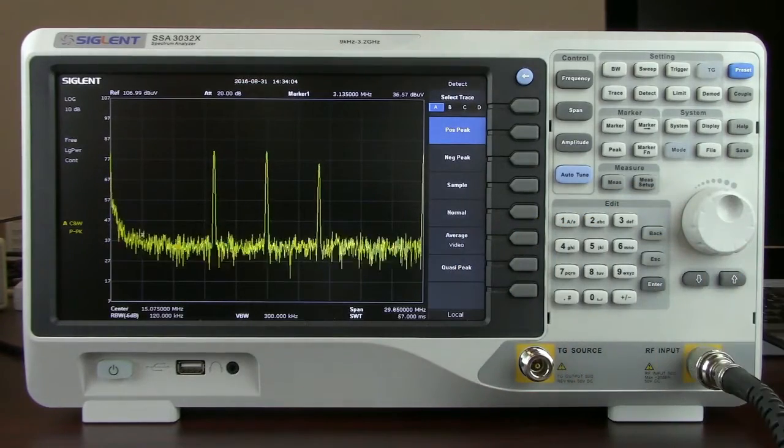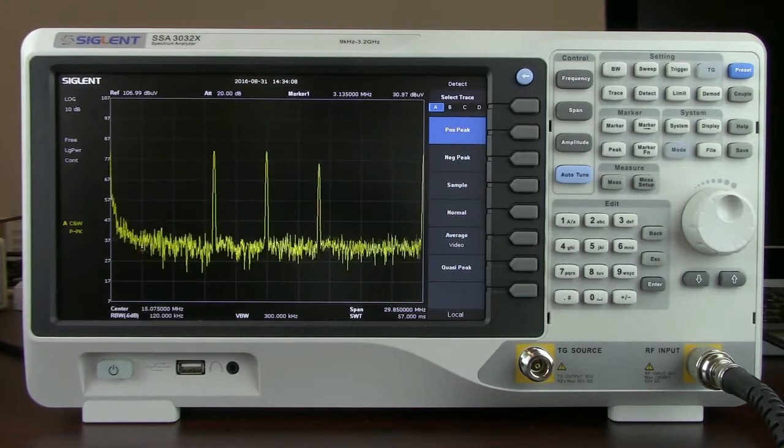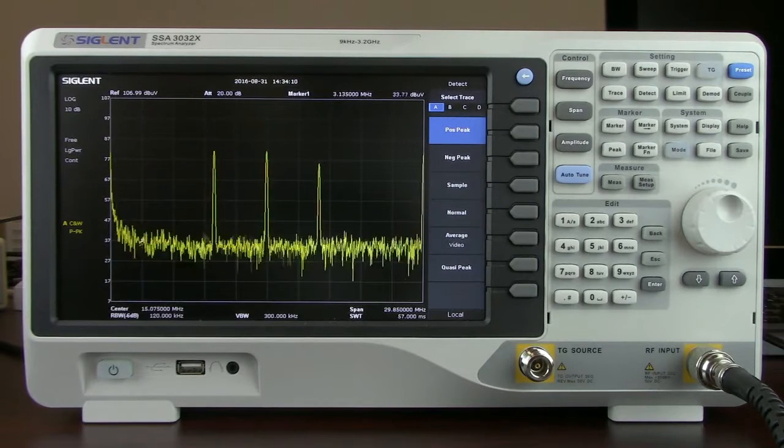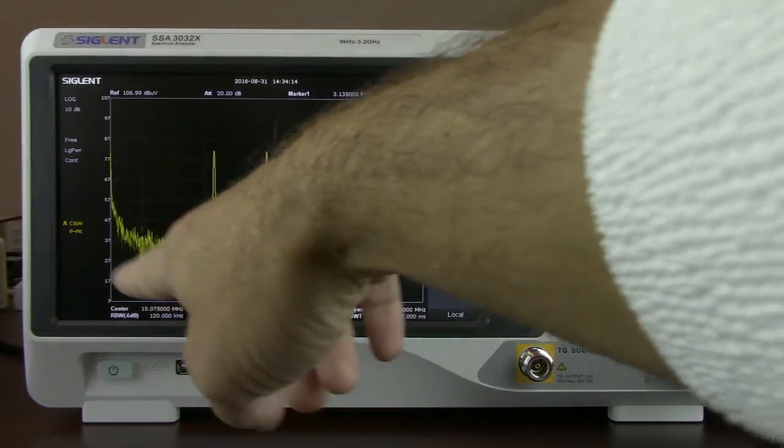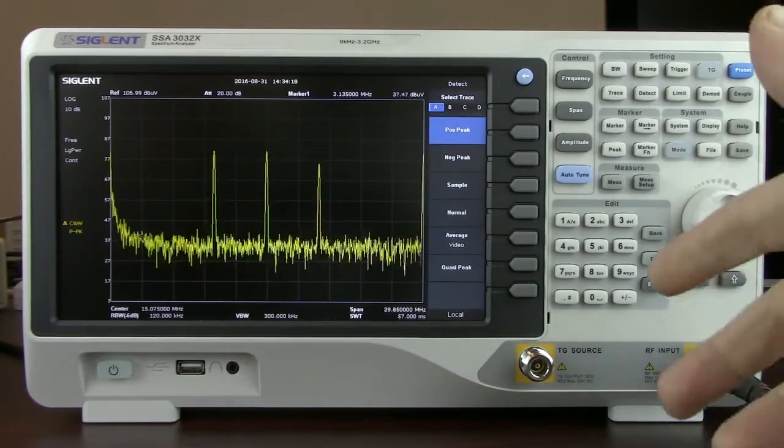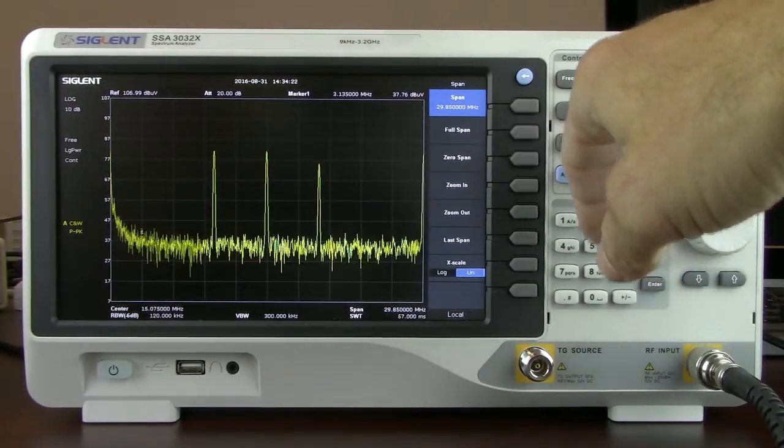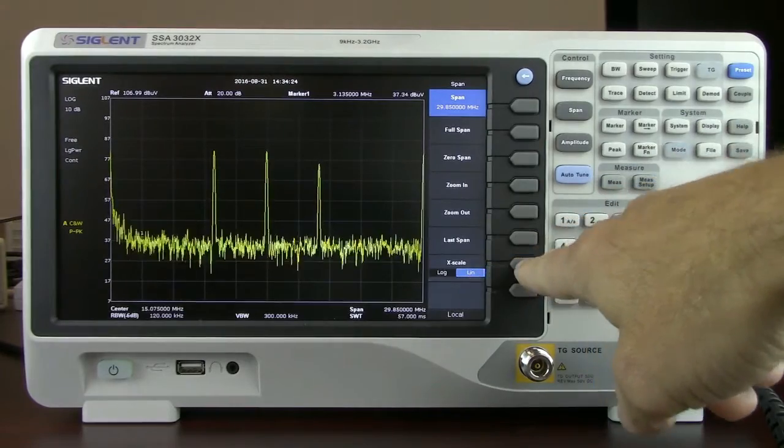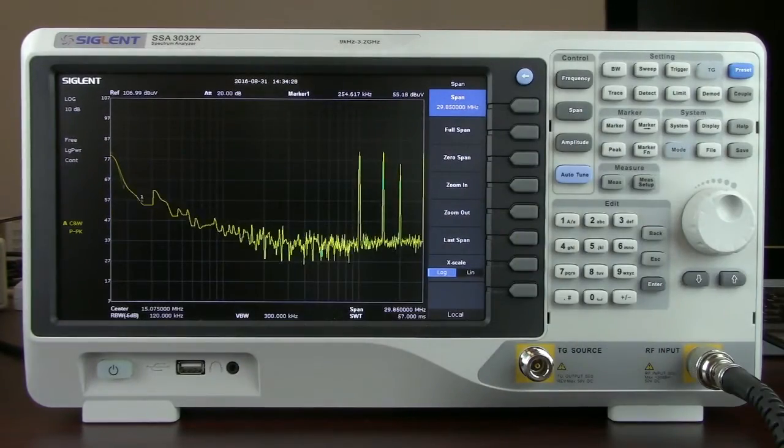Some other helpful features with the SSA when it comes to performing pre-compliance measurements: normally we have log amplitude and linear frequency, but in pre-compliance or compliance applications we typically see log log. If we press the span key we'll see the X scale can be changed to log. So now we've got log amplitude as well as log frequency. And now we can enable limits.